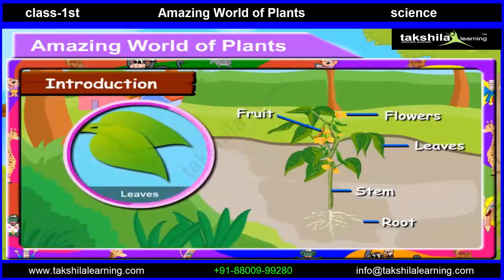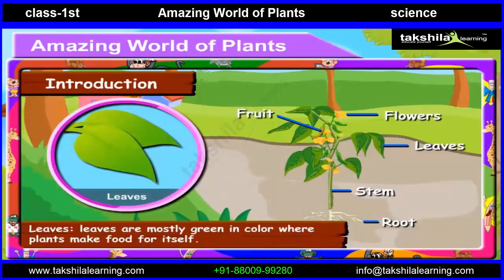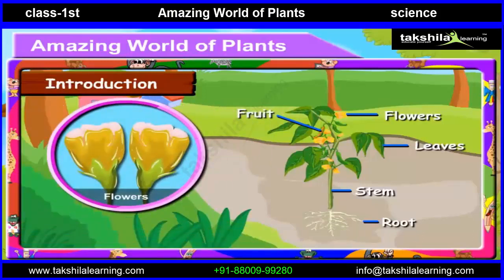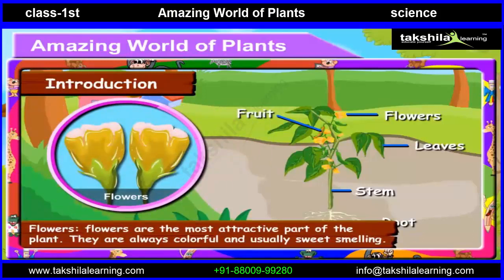Leaves. Leaves are mostly green in colour, where plants make food for itself. Flowers are the most attractive part of the plant. They are always colourful and usually sweet smelling.